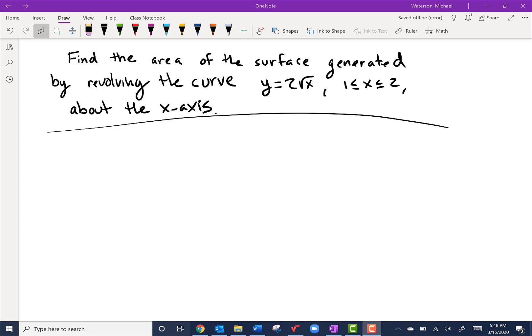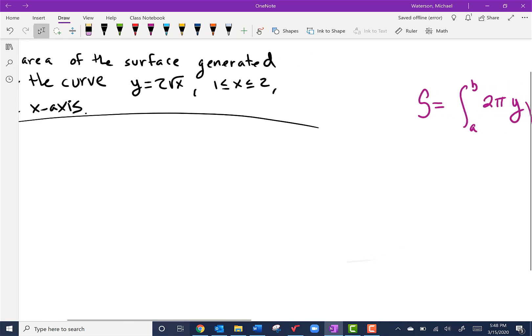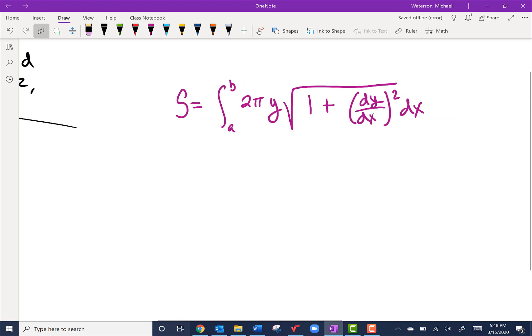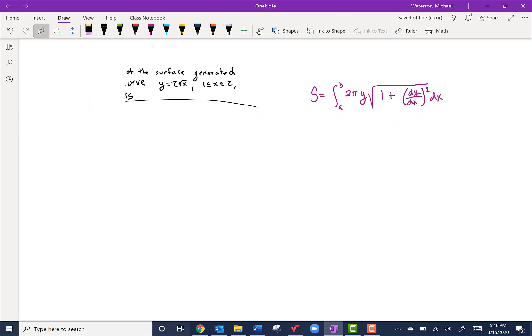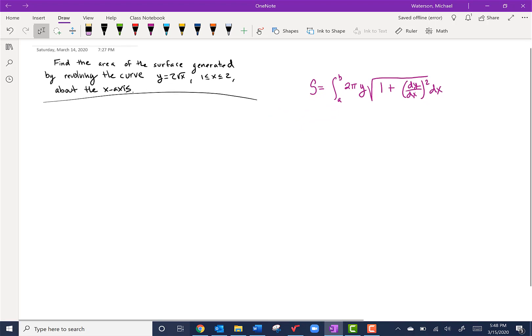So why don't we first look and see what formula we're going to use. I believe it's going to be just like this, so let's start putting it all together. First, I'd like to define all the variables. What's a? What's b? I think a is going to be 1, and b is going to be 2.